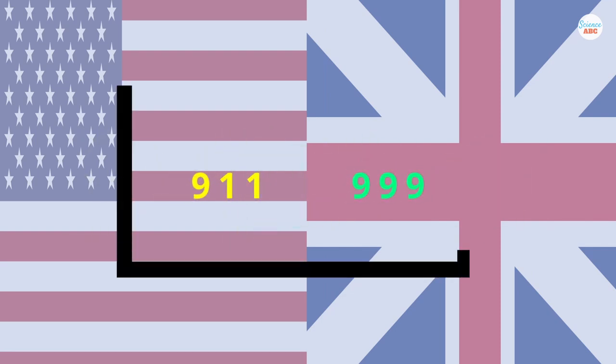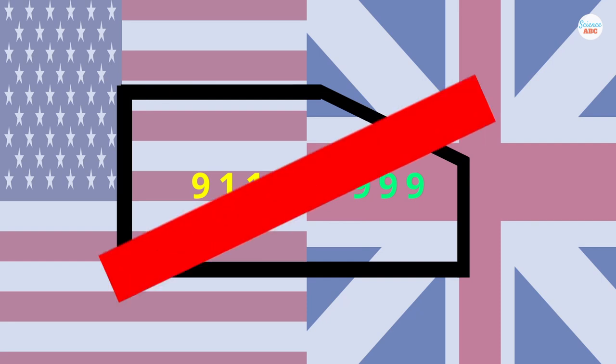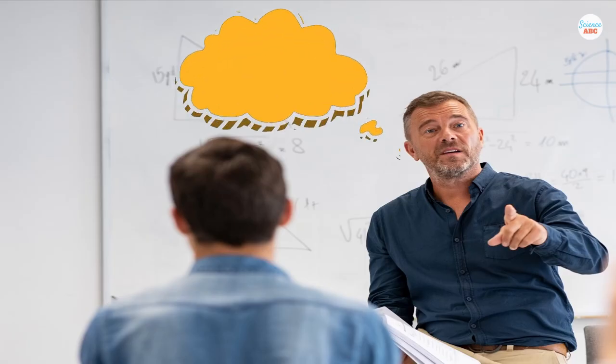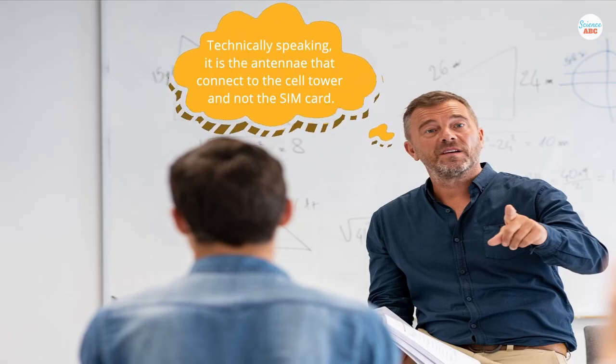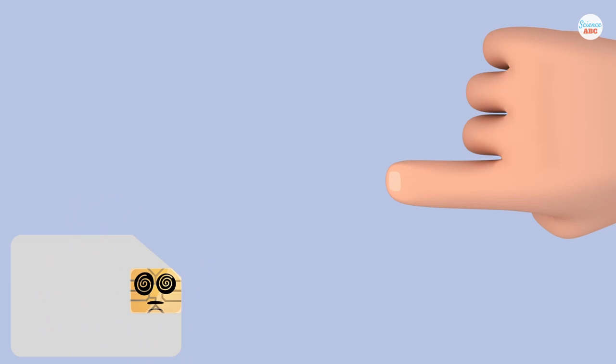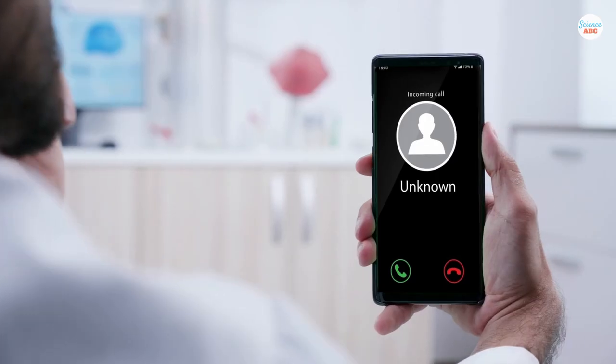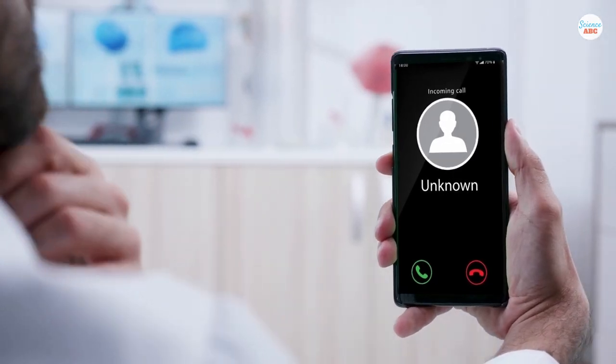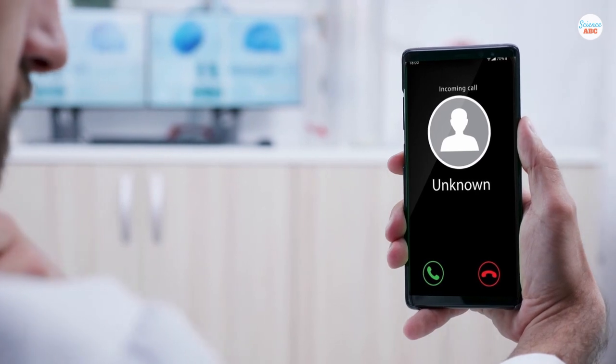In some Western countries like the United States and England, people can connect to an emergency number such as 911 or 999 even if their SIM cards aren't working properly. This is because it is not the SIM card, but rather the antenna of your phone that connects you to a network tower. A SIM card only has the phone number and carrier info, so it is not necessary to make an emergency call. In such cases, since the SIM is dysfunctional, the emergency service center won't get the caller ID or the caller's location, but the call can still be connected.